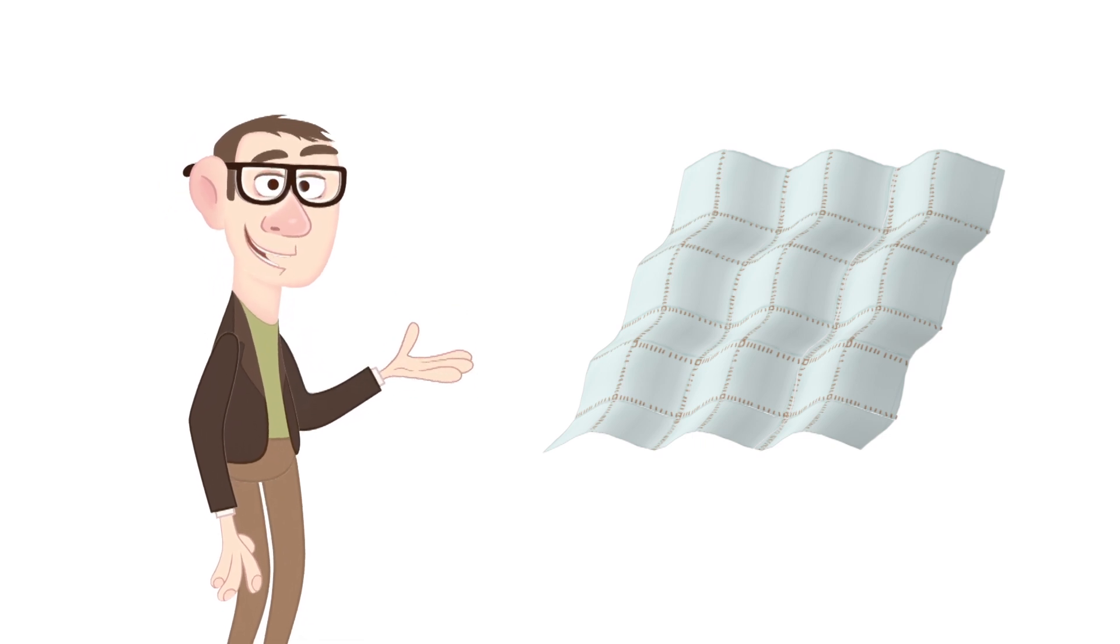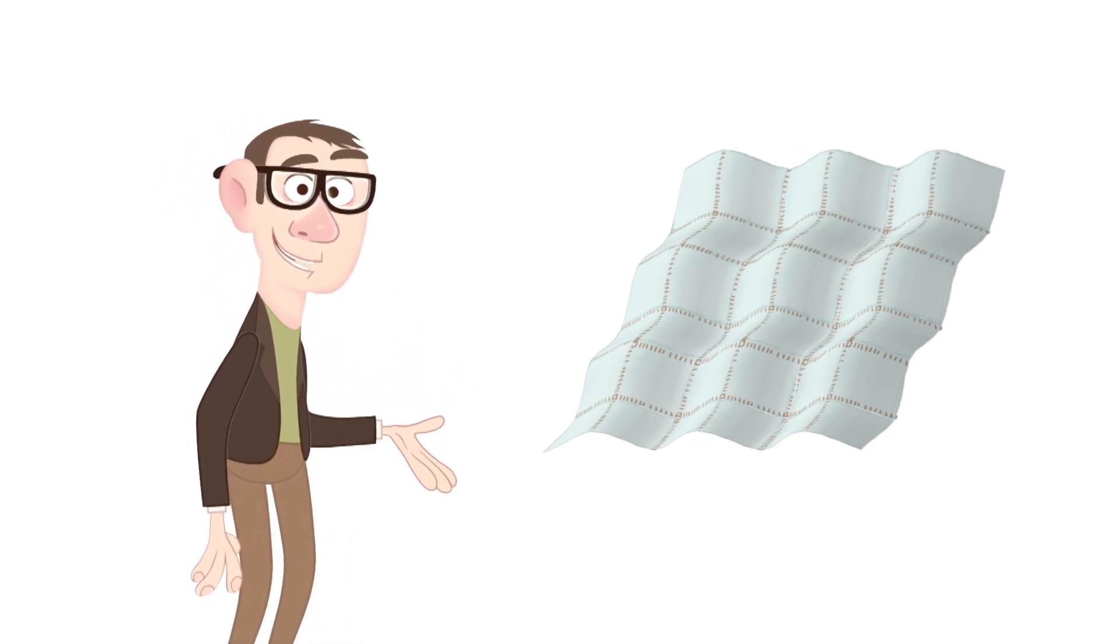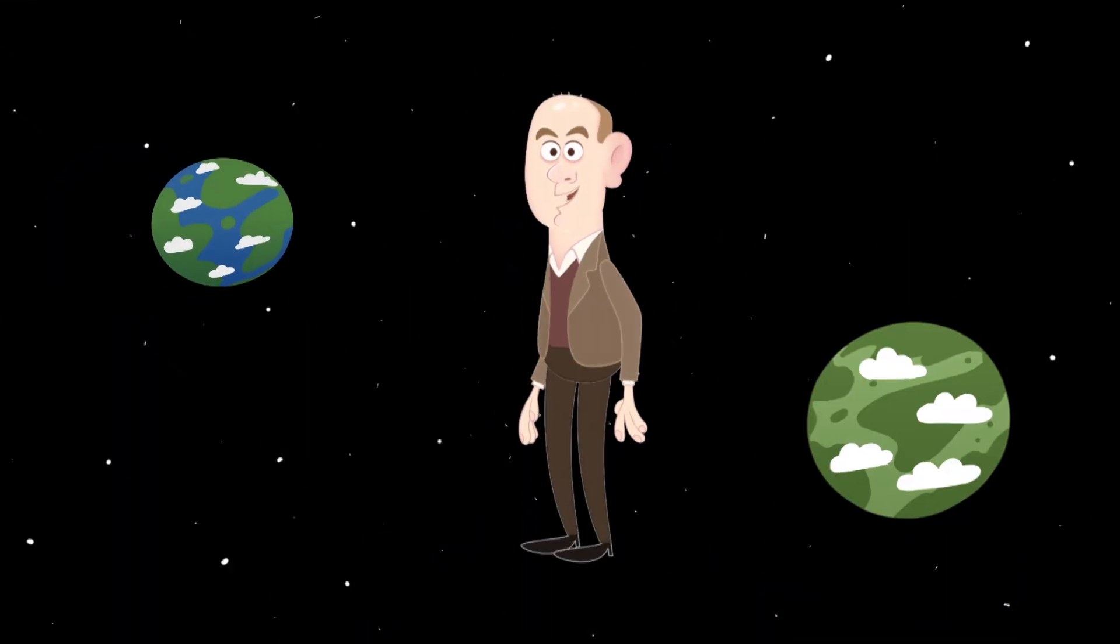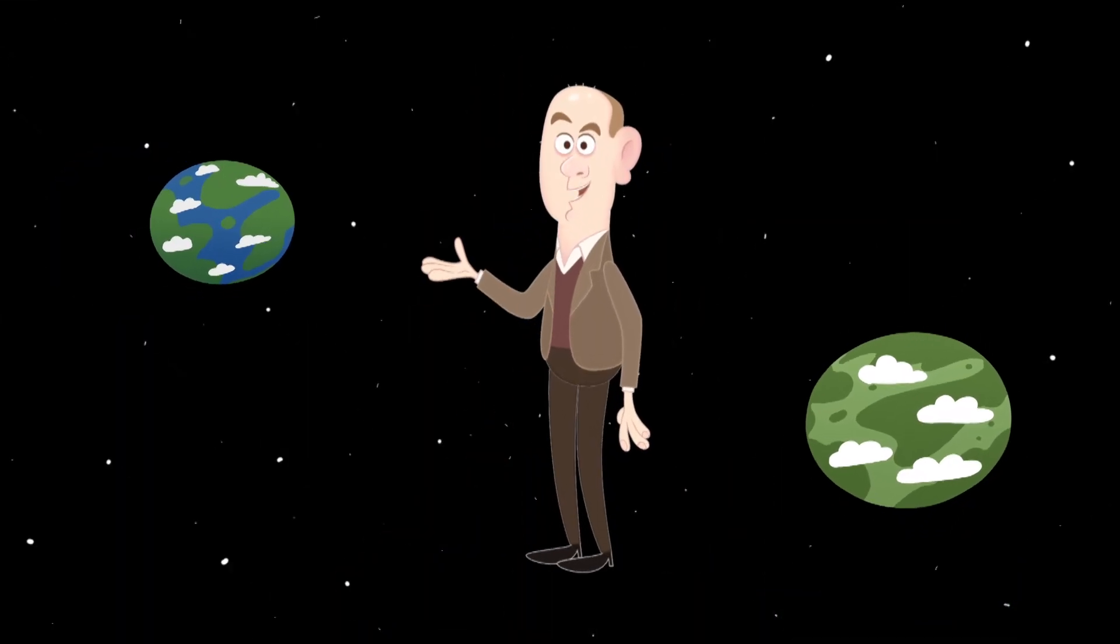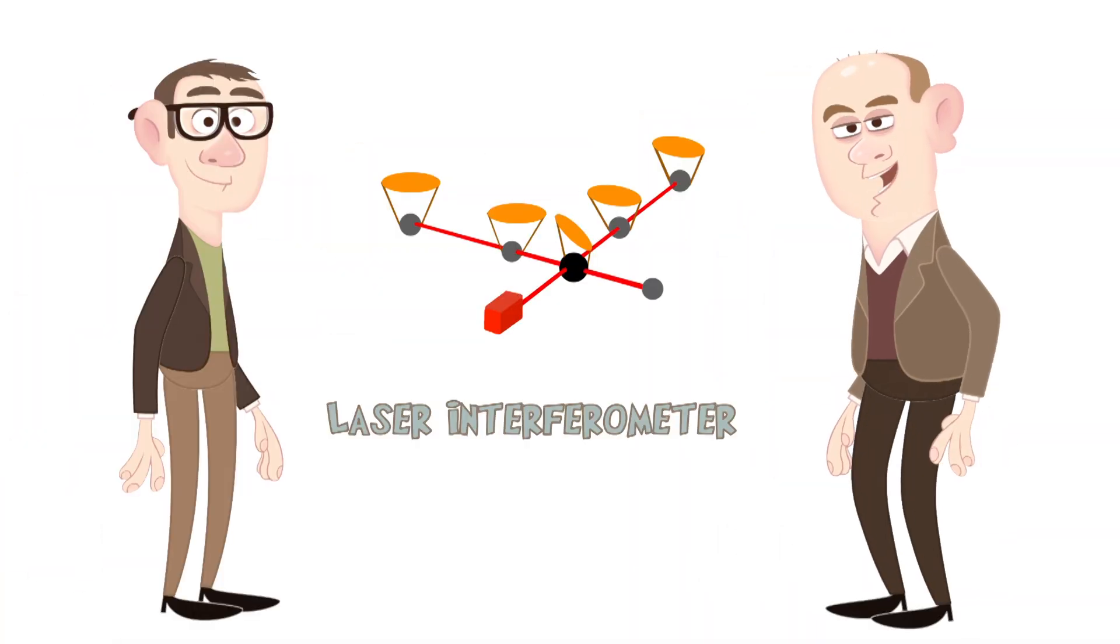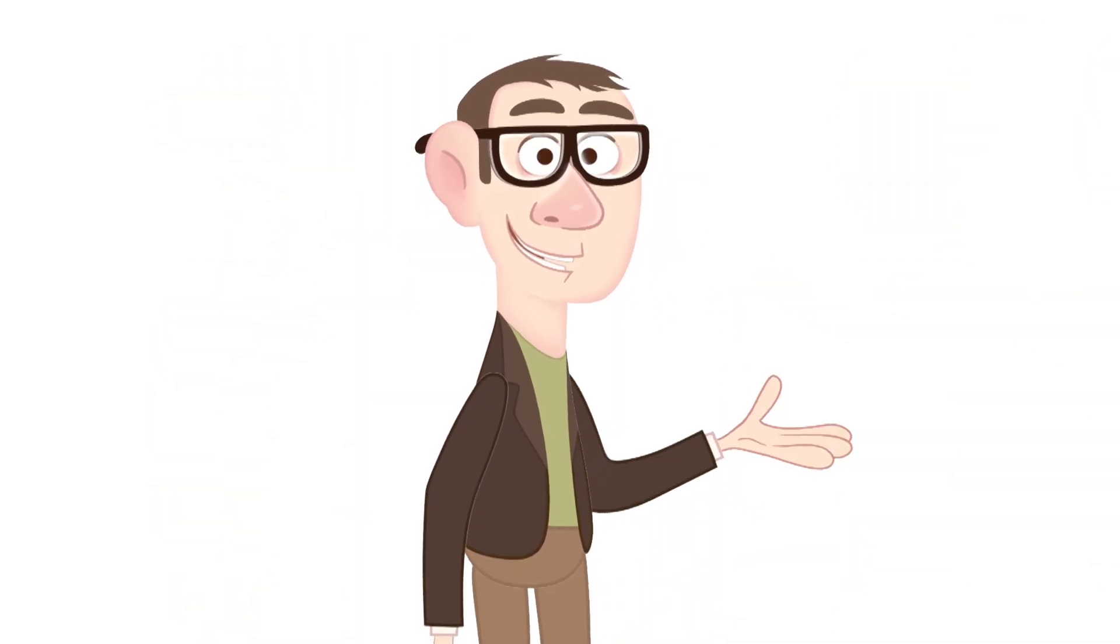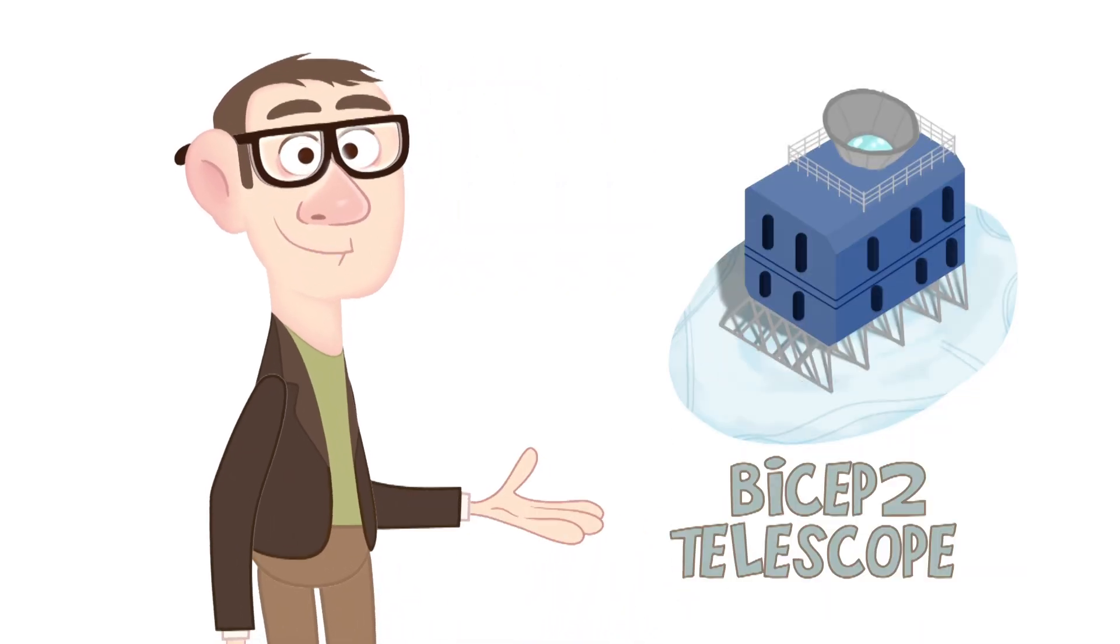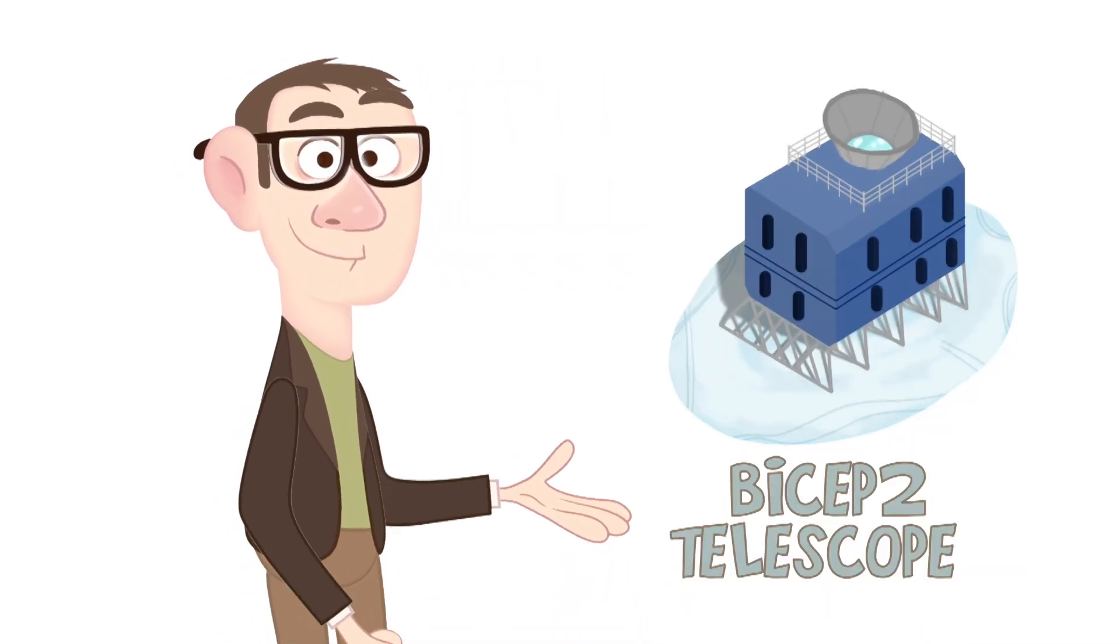The stitching can leave wrinkles in the spacetime material. These are called gravitational waves, which should be detectable as tiny, repetitive, subtle squashes and stretches in space. So we're building experiments to check if they are there. In the meantime, indirect evidence, most recently in the polarisation patterns of light left over from the Big Bang, strongly suggest that they are.